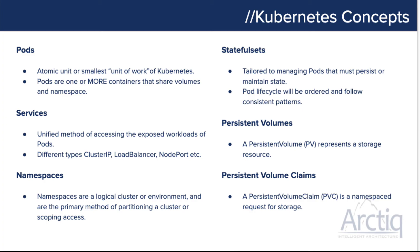The first thing is pods. Pods can be more than just a single container — they can share volumes and namespaces. In many cases, we're going to deploy more than one container inside a pod. A good example of this is in Istio, where we deploy sidecars to collect telemetry and metrics. When you describe that pod, you'll see more than one container.